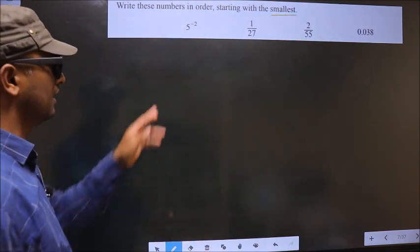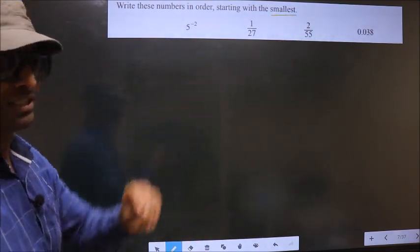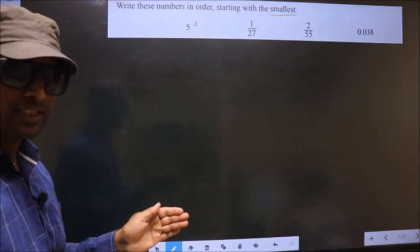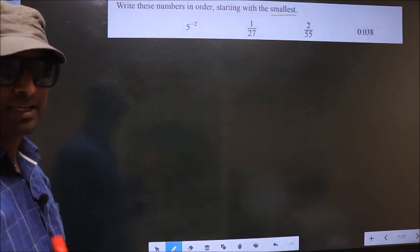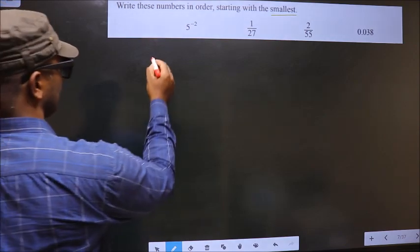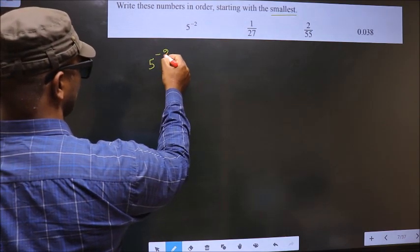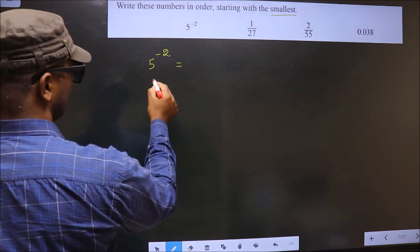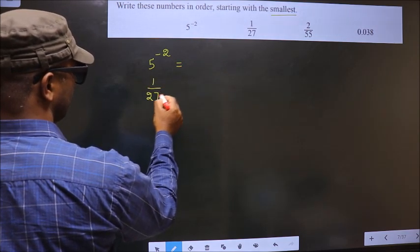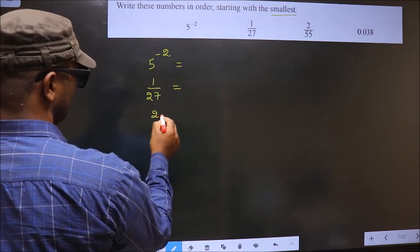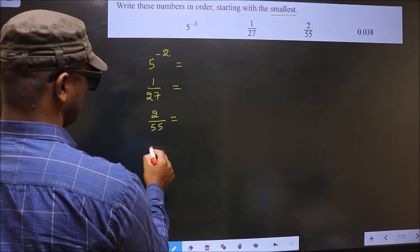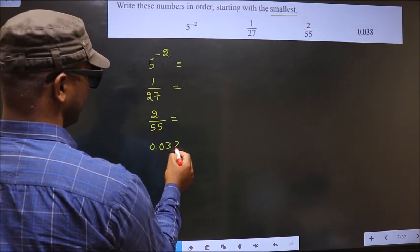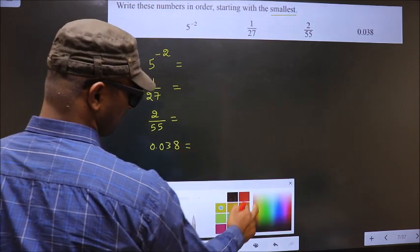We should write these numbers starting from the smallest to the largest. First, the given numbers are 5 power minus 2, 1 by 27, 2 by 55, and 0.038.